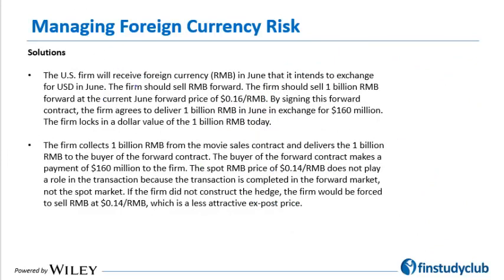The U.S. firm will receive RMB in June and exchange it for U.S. dollars, but does not want exposure to spot market vagaries. The firm should sell RMB forward — since it has RMB assets, it sells 1 billion RMB at the agreed rate. Doing so ensures it receives 160 million dollars from the forward dealer. The firm collects 1 billion RMB, delivers it to the forward dealer, and receives the promised 160 million dollars. The spot RMB rate of 0.14 plays no role.